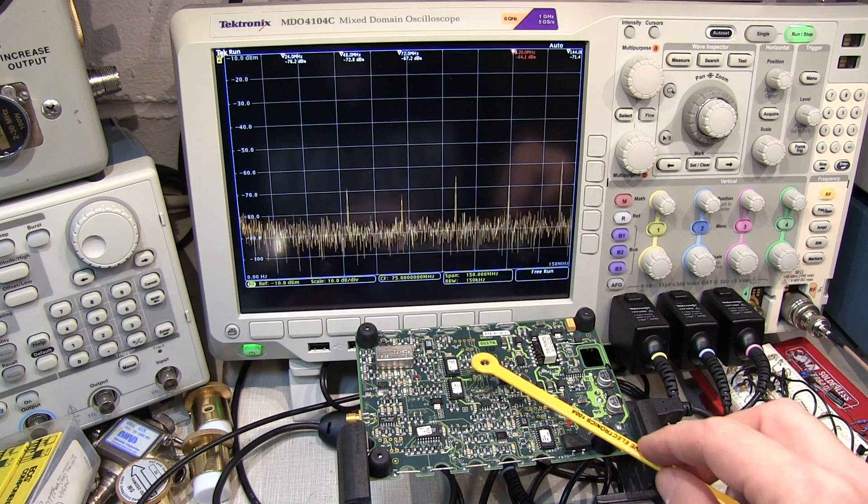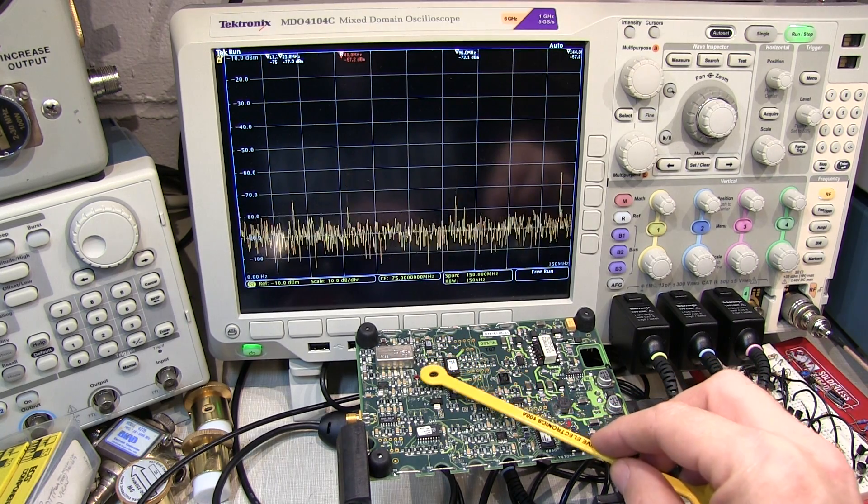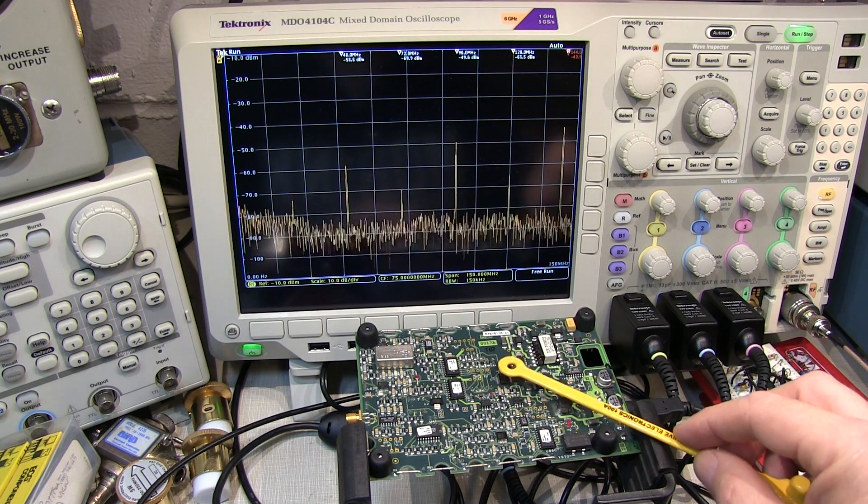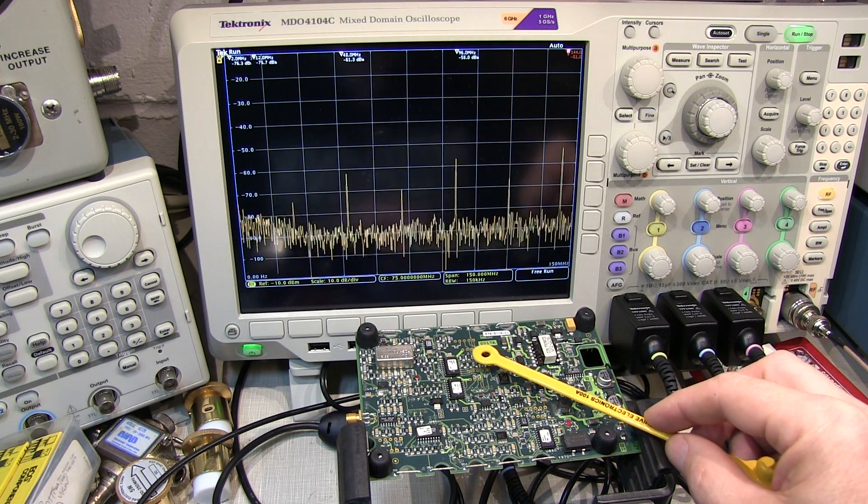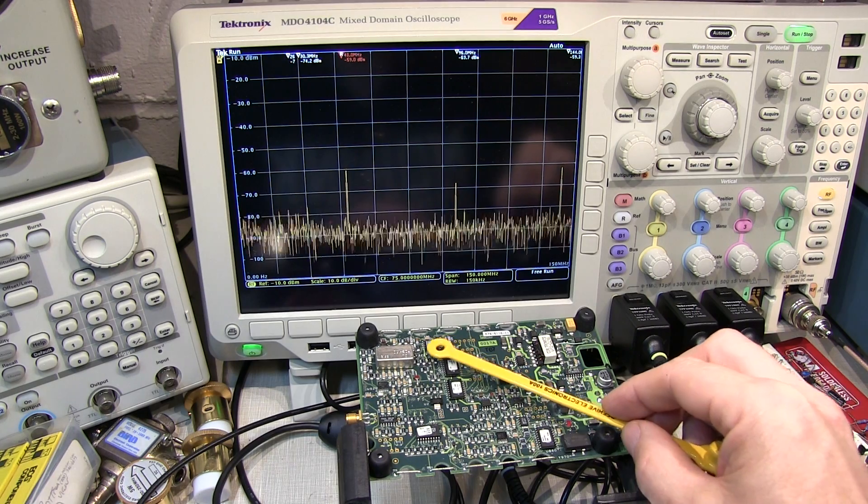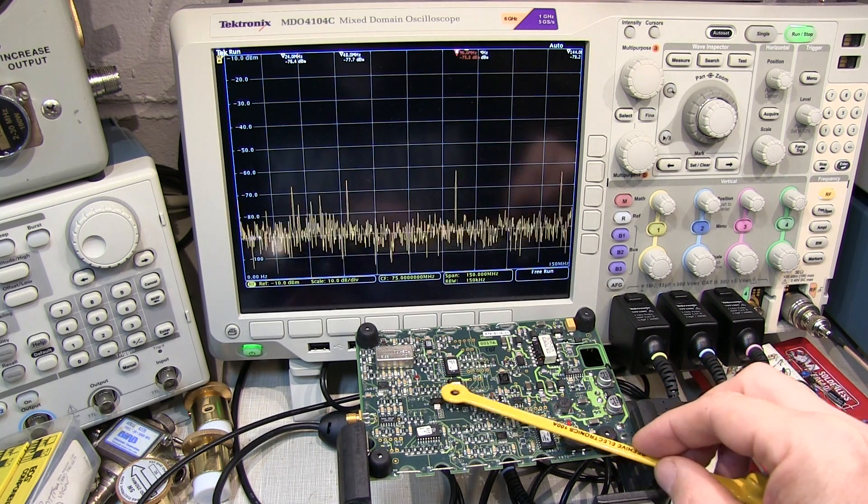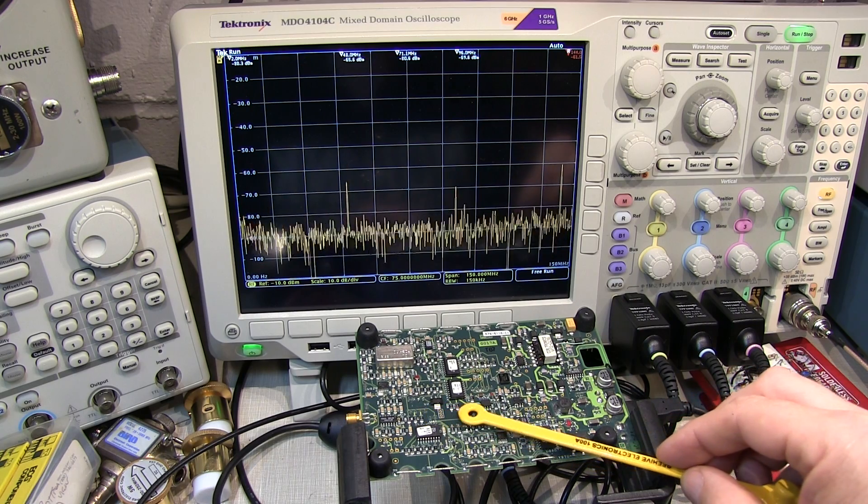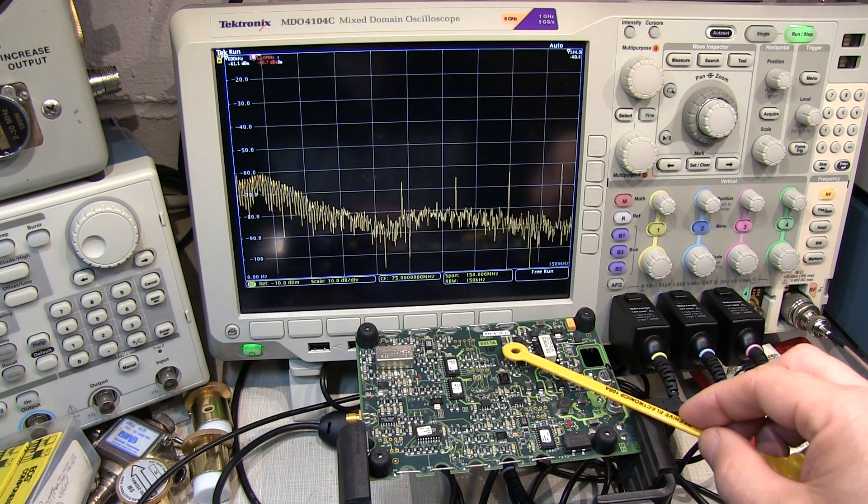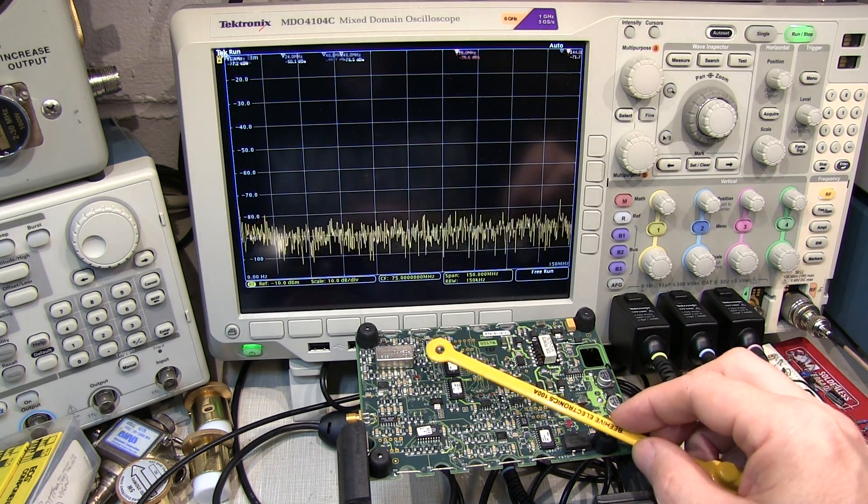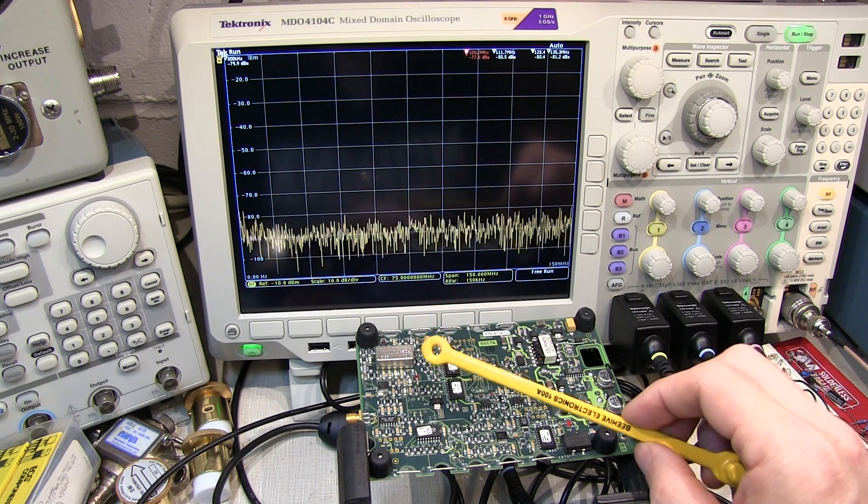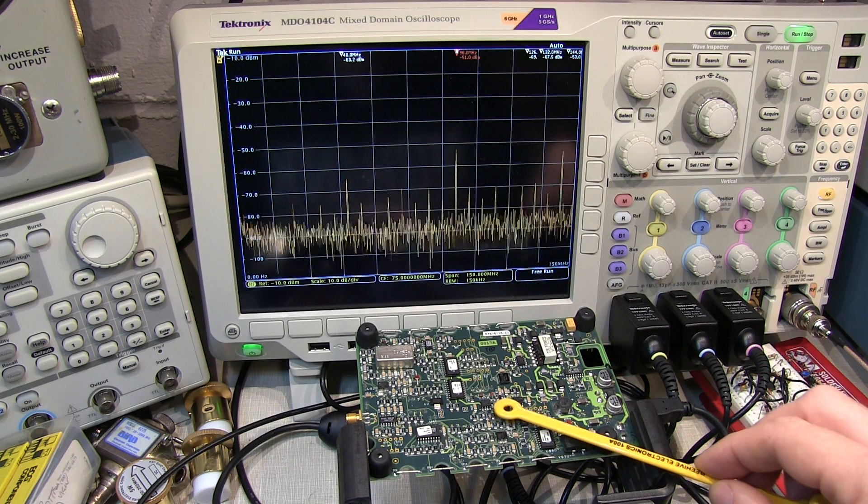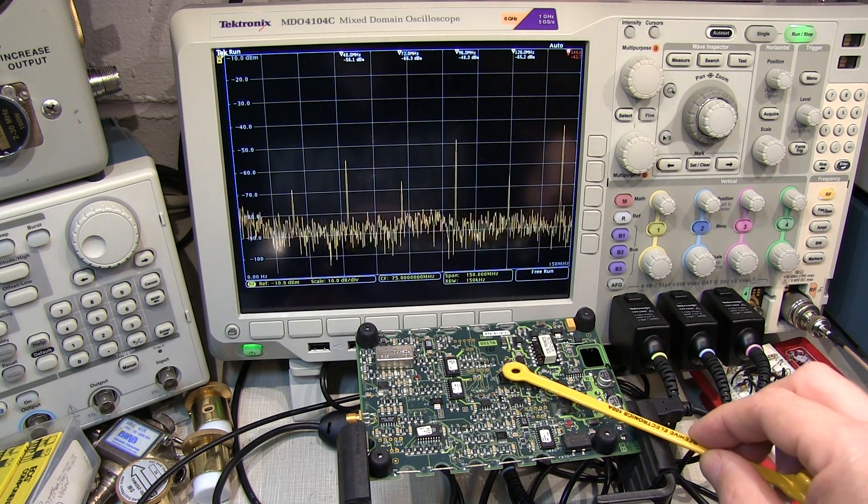Now with the H field probe, we're looking for magnetic fields, which are being created by changes in current. Now what you'll find generally is that as frequencies go up, the impedances that are involved in the board go down. You might have controlled impedance traces and things like that, which generally means the currents involved are a little bit higher. So I found that the H field probes are generally more effective in locating sources of higher frequency emission than the E field probes are.